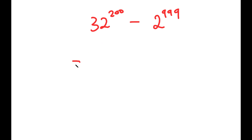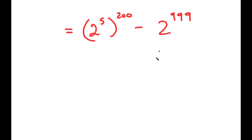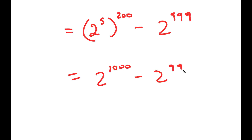To solve this, I'm going to first rewrite 32 as 2 to the power of 5. So I get 2 to the power of 5 to the power of 200, minus 2 to the power of 999. This turns into 2 to the power of 1000 minus 2 to the power of 999, because the 5 and 200 multiply.